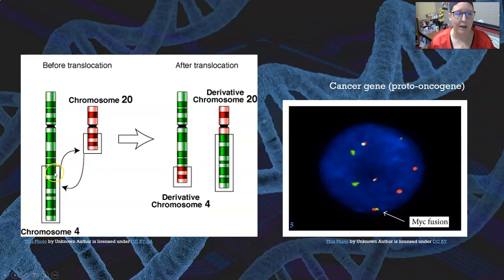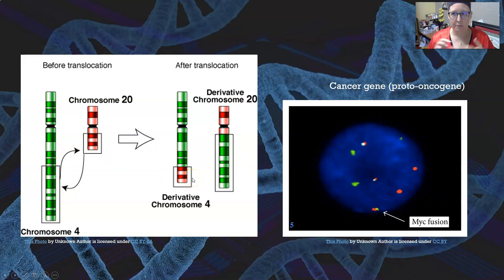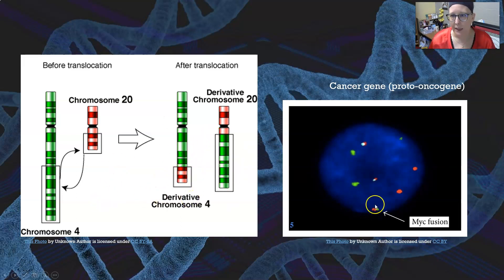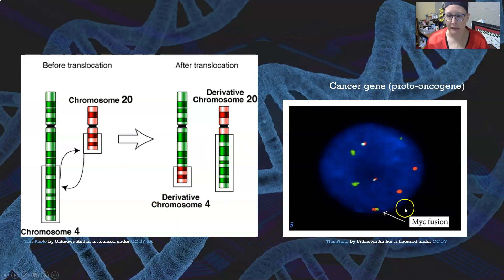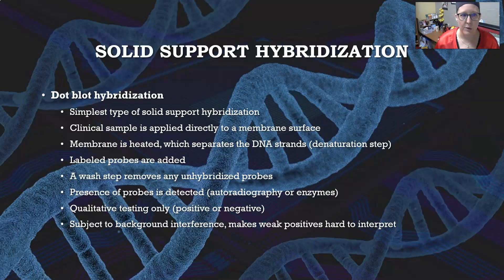A translocation is where two chunks of two different chromosomes swap locations — that happens frequently in cancers. This is an example of detection for a cancer gene or proto-oncogene, and we're going to look at some of these and how we can detect them.